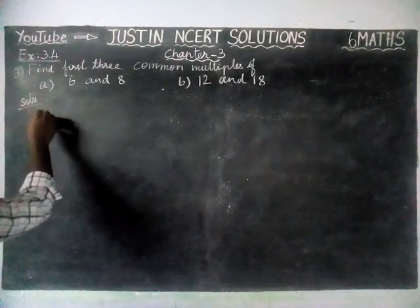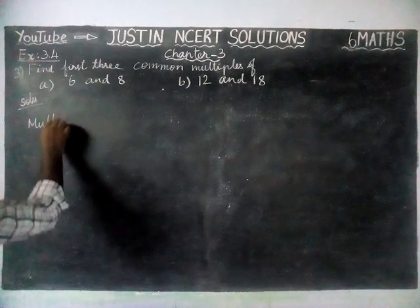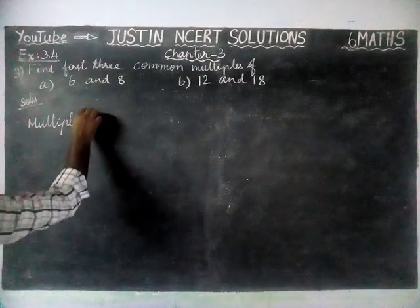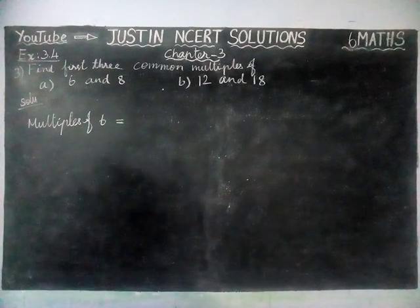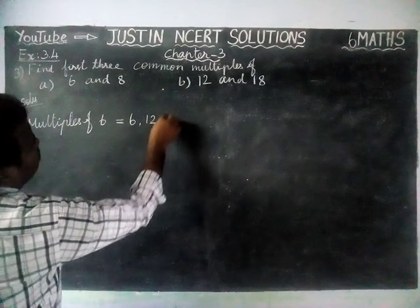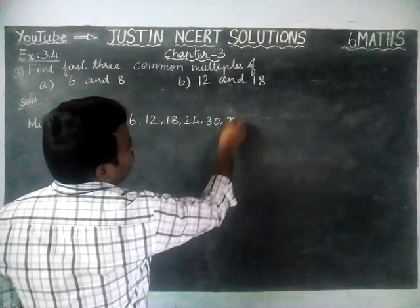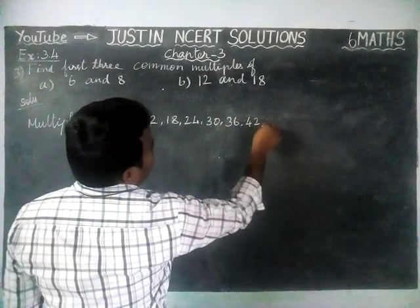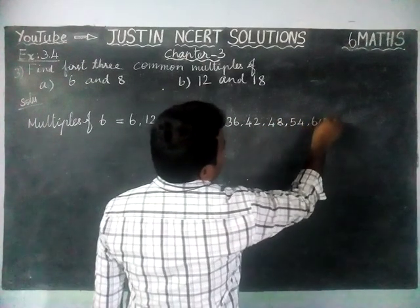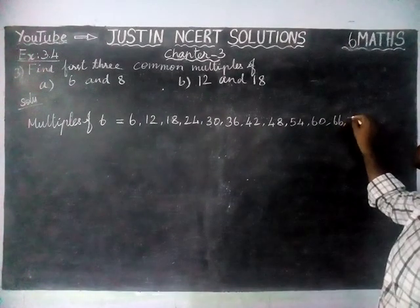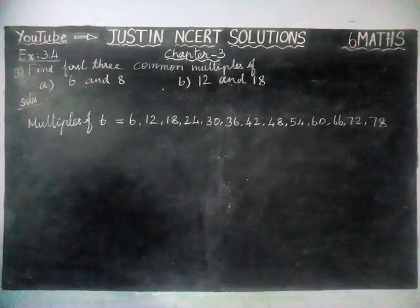First, we are going to take part A — multiples of 6 and 8. First, we are going to find all the multiples. Multiples of 6 is equal to — we have to find the 6th multiplication table: 6, 12, 18, 24, 30, 36, 42, 48, 54, 60, 66, 72, 78 — we will stop here itself.